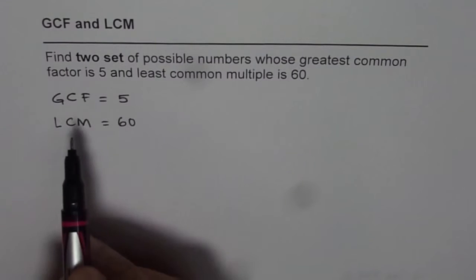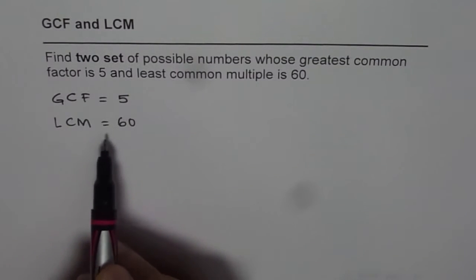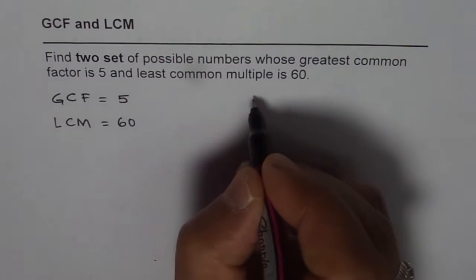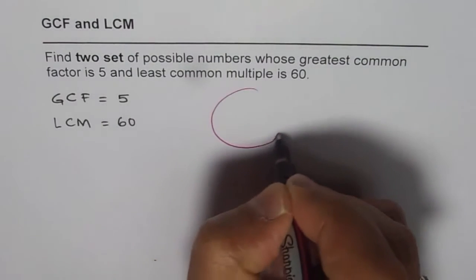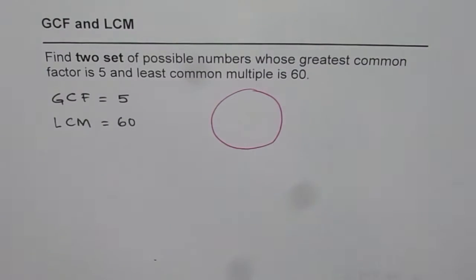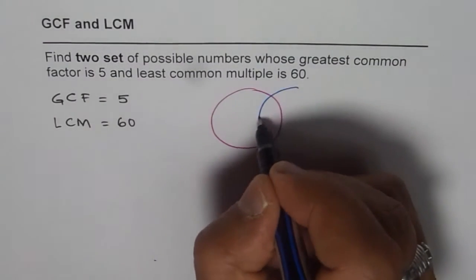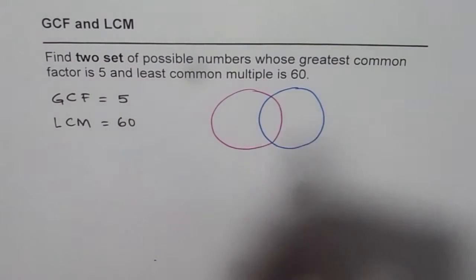Now when we are given greatest common factor and least common multiple between two numbers, we can look into their factors. Let's say the circle represents factors of one of the numbers and the other circle represents factors of the other number.